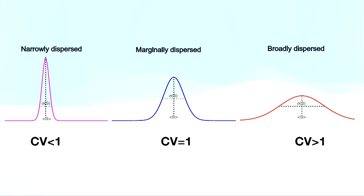The relevant mathematical quantity is the coefficient of variation (CV), which is the fluctuation in service time divided by the mean service time. For a narrowly dispersed distribution, the mean is much greater than the standard deviation, so CV is less than one. For a marginally dispersed case, they are comparable and CV equals one. But for the broadly dispersed case, the fluctuation is much greater than the mean, so CV is greater than one.